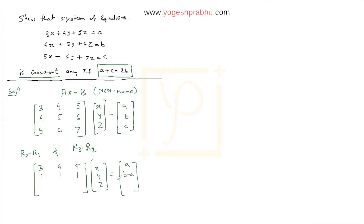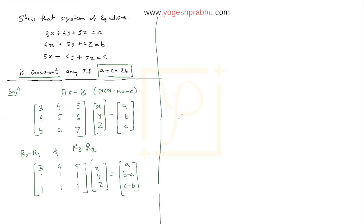Now we do R3 minus R2. Row three minus row two gives: 5−4 = 1, 6−5 = 1, 7−6 = 1, and the right-hand side becomes c − b. So after these two operations we have a matrix ready to simplify further.